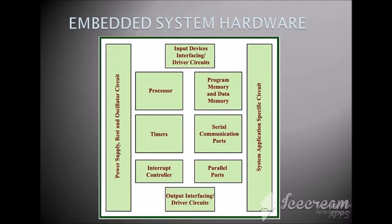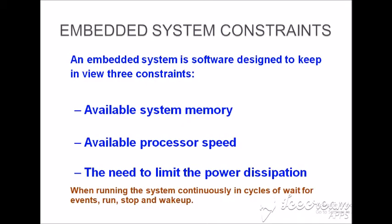We also have parallel ports and output interfacing, along with system application-specific sources. The constraints in an embedded system include: first, available system memory — when selecting a controller or processor the memory is the primary consideration, just like checking RAM when buying a mobile phone. After that, processor speed — how much RAM it uses and how fast the processor runs. Finally, the need to limit power dissipation — how many cycles the work takes to complete.